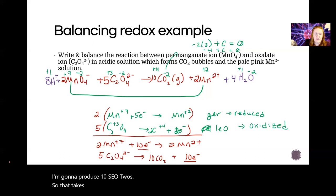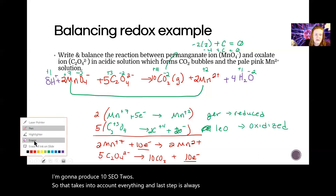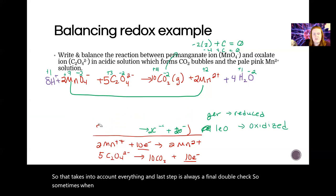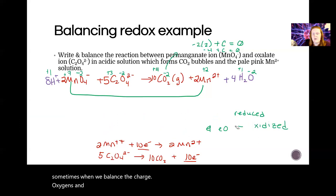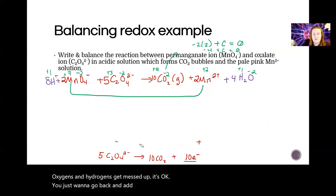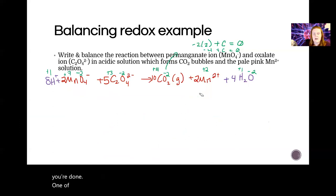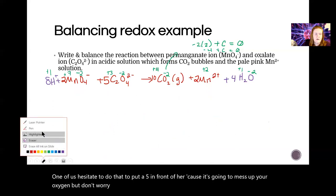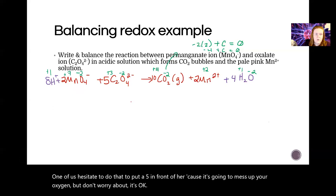So sometimes when we balance the charge, oxygens and hydrogens get messed up. It's okay. You just want to go back and add in the appropriate numbers of water or hydrogen ion after you're done. A lot of us hesitate to do that, to put a five in front of here, because you know it's going to mess up your oxygen, but don't worry about it. It's okay.